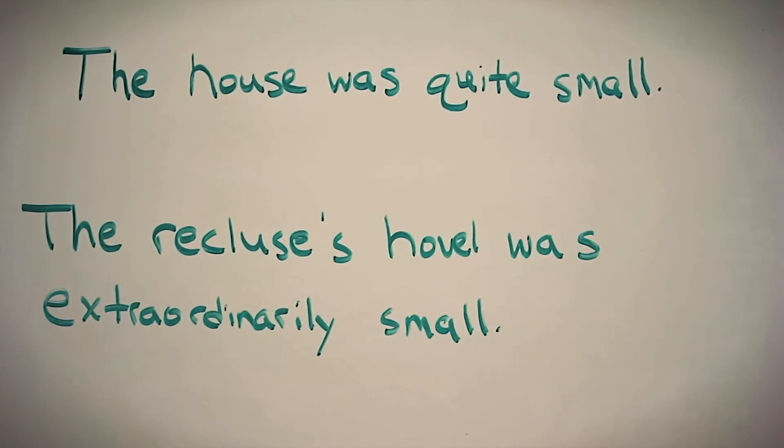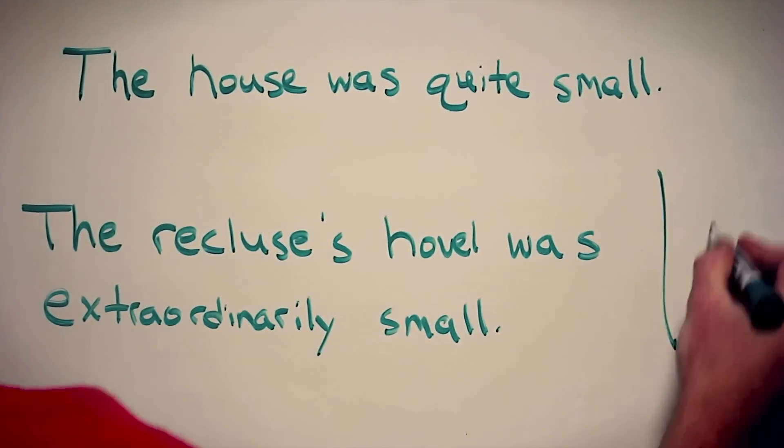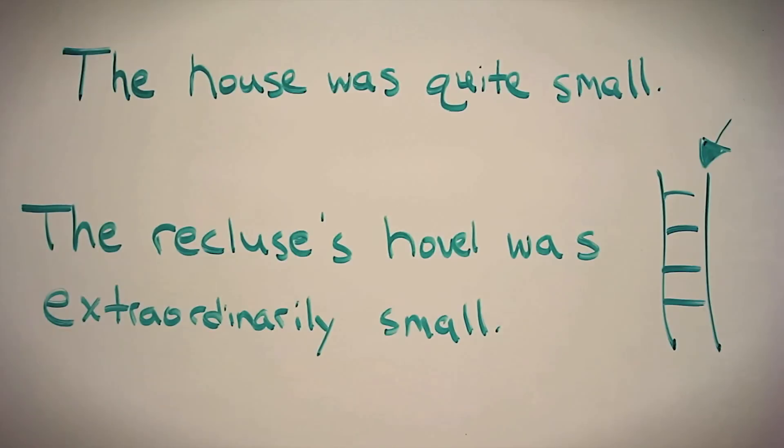We replaced house with a more specific version of the word, in this case hovel. In this example we also gave more description to the house, which makes the sentence more intriguing overall. We have just taken Michael's advice and climbed the ladder of abstraction. However, you can go too far in the other direction. It is possible to be over-specific and thereby overwhelm your reader, so be careful not to do that either.